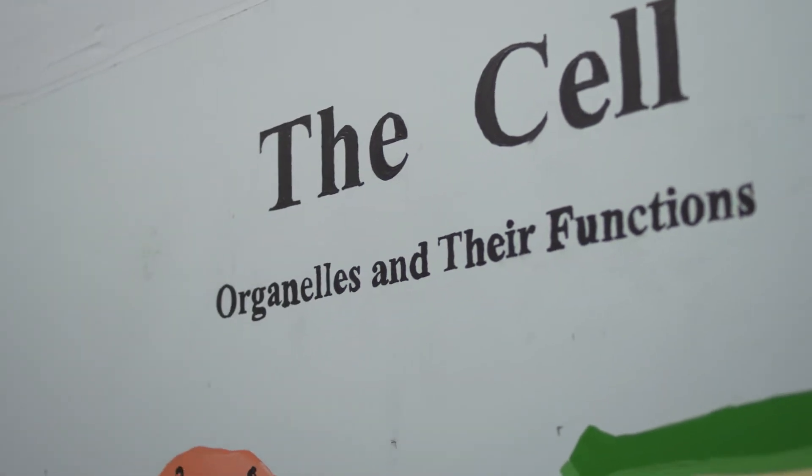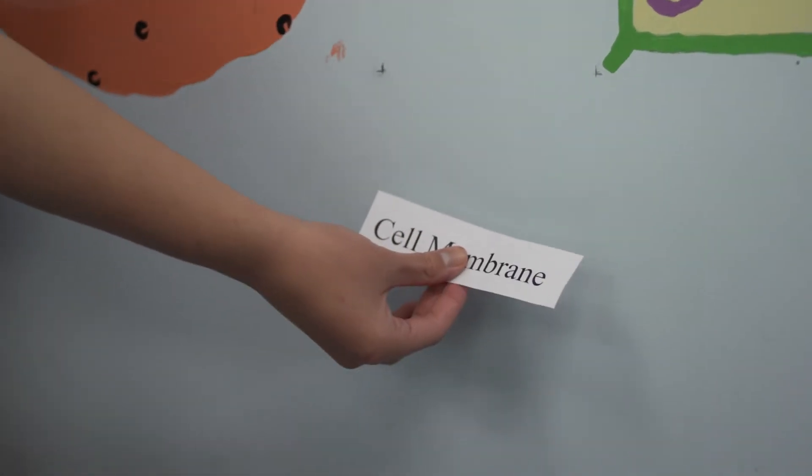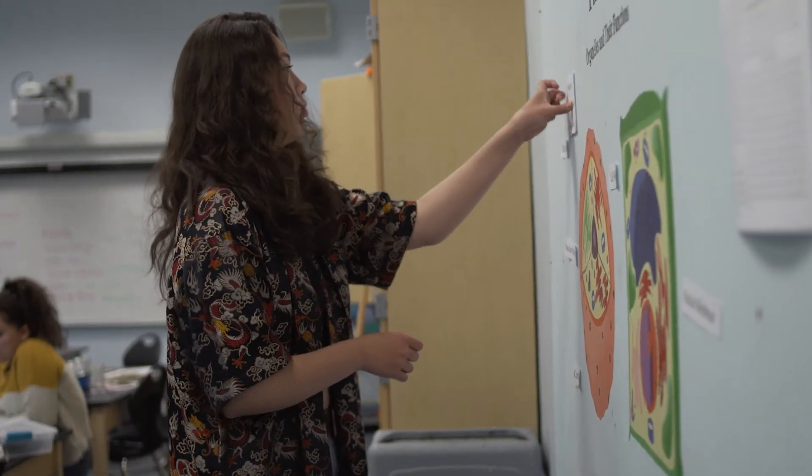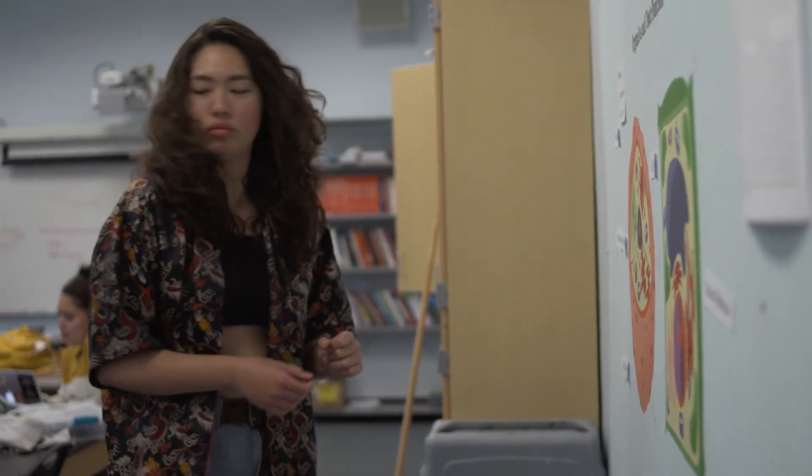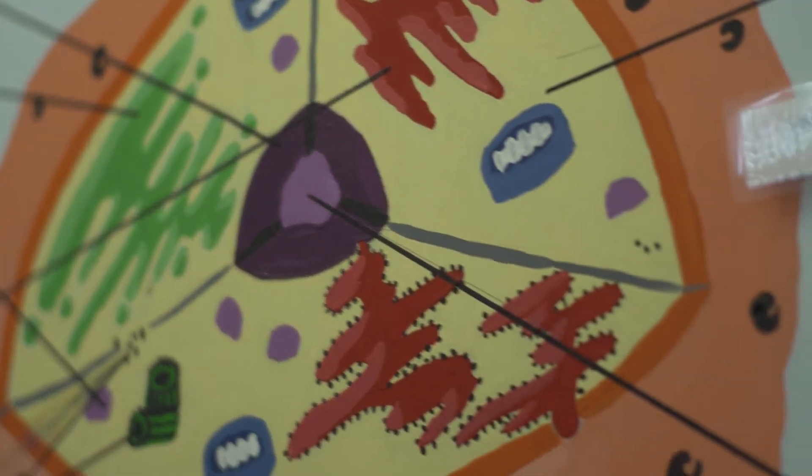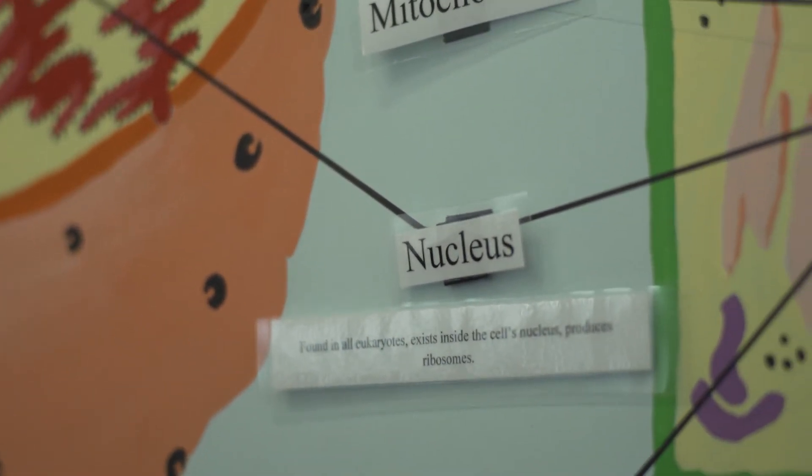We're going to have lines going to each of these labels and they're going to be on Velcro. So the students are going to be able to come up with Velcro and attach which cell part is which.